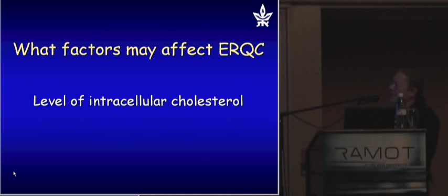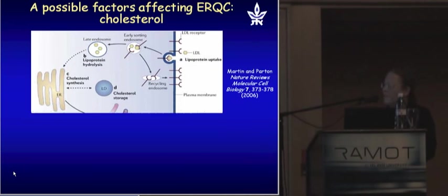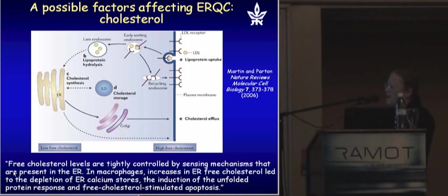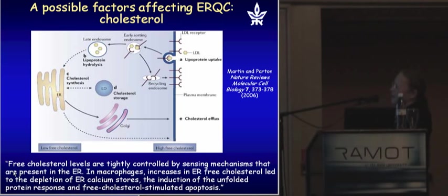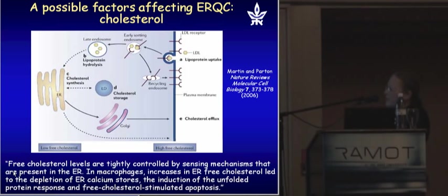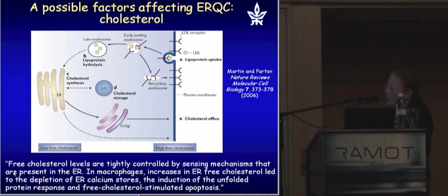One factor that may affect ERQC is the level of intracellular cholesterol. Intracellular cholesterol comes from two sources: one is synthesis in the ER, distributed across all cellular membranes, and the other is via the lipoprotein particle through the LDL receptor. We know that if free cholesterol levels in the cell rise, then ER calcium decreases, which may cause cholesterol-induced cell death or apoptosis. So it is very important to keep cholesterol homeostasis — not too high, not too low. We asked whether free cholesterol levels can change the severity of Gaucher disease.